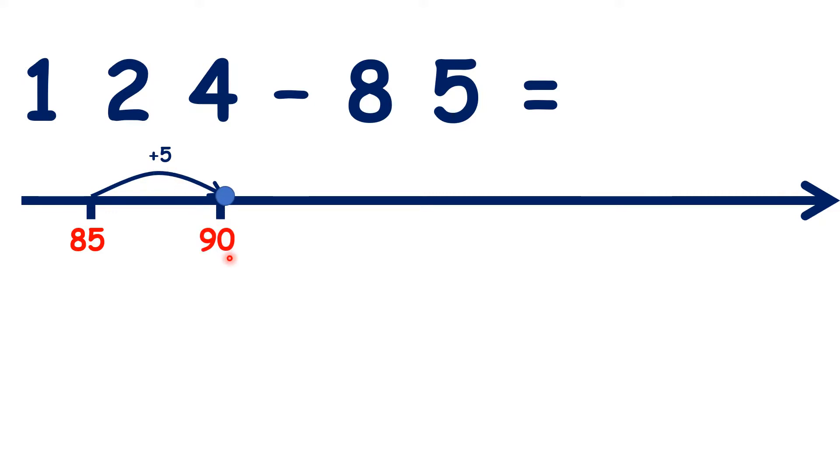Now we can think how many more we need to get to 100. Adding another 10 gets us to 100. And from 100, it's easy to see what we need to add to get to 124. We need another 24.